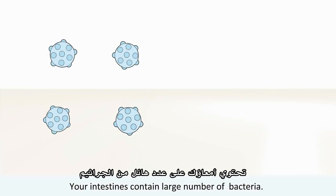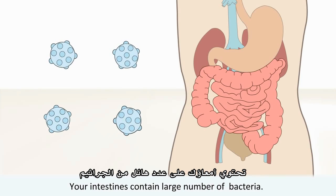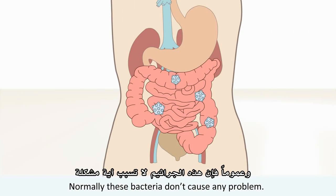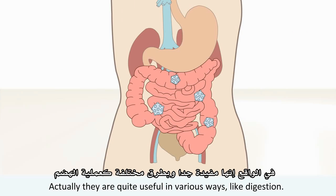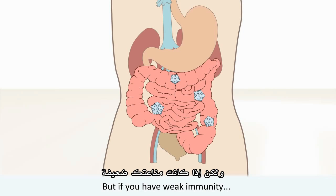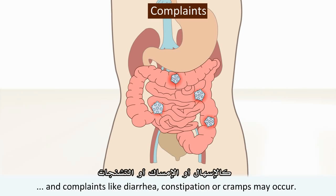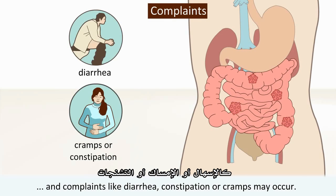Your intestines contain a large number of bacteria. Normally these bacteria don't cause any problem; actually they're quite useful in various ways, like digestion. But if you have weak immunity, the balance may become disturbed and complaints like diarrhea, constipation, or cramps may occur.